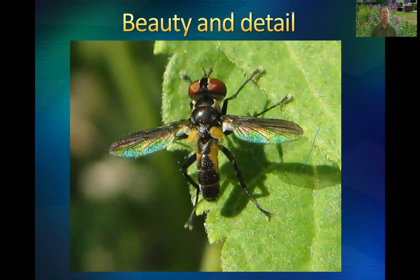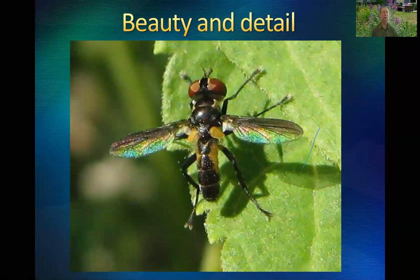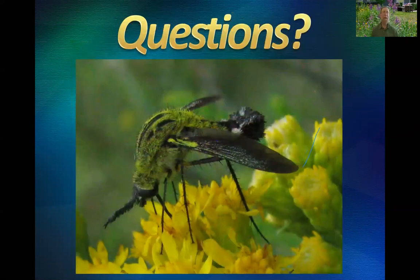Finally, I mentioned at the beginning beauty and detail. It really took this kind of macro photography for me to be able to see some of this detail. This tiny little fly is a species of tachinid fly — look at the color on those wings. That is something I would never have seen with the naked eye, and it's gorgeous. All right, I will turn it over to questions.